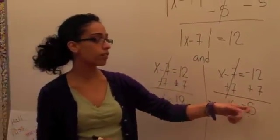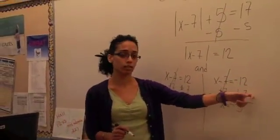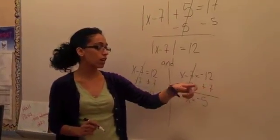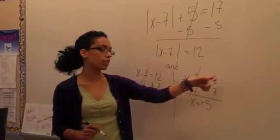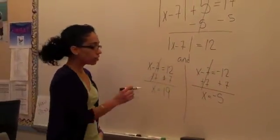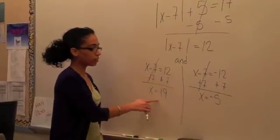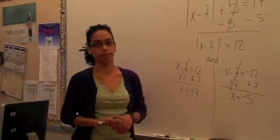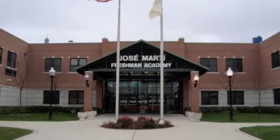The reason why it's negative 5 is because we're actually subtracting, meaning that there's two separate signs. And the reason why it's negative is because it takes the sign of the larger number. So your final answer is x equals 19 and x equals negative 5.